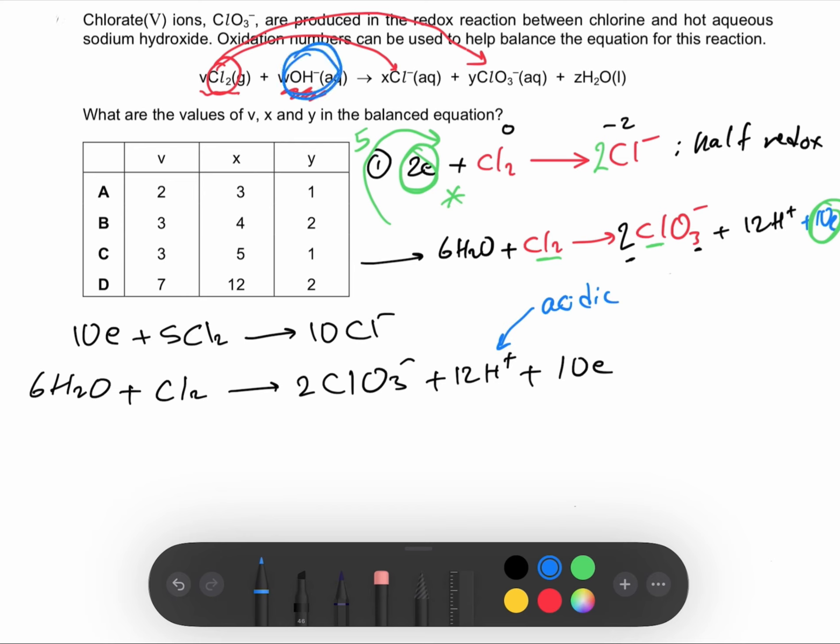Since you need to do it in basic solution, you have to add OH⁻ to both sides of your equation. The number of OH⁻ must be equal to the number of H⁺, so we have to add 12 OH⁻ here and another 12 OH⁻ here.